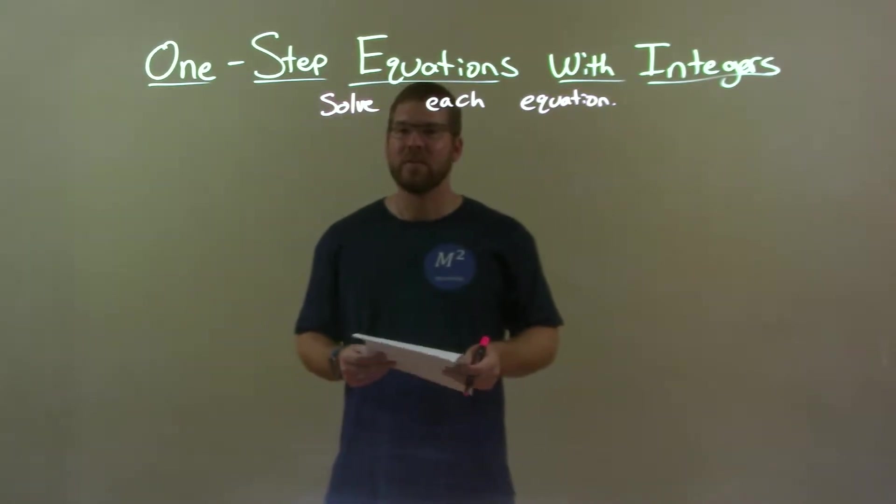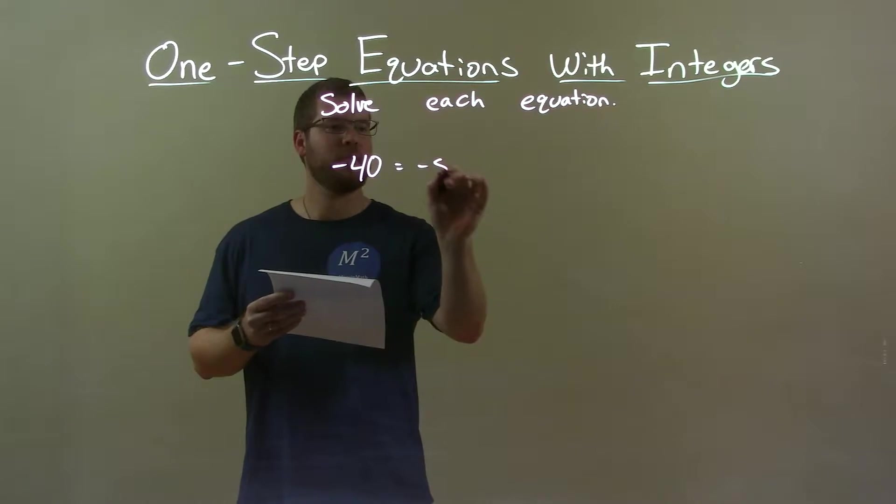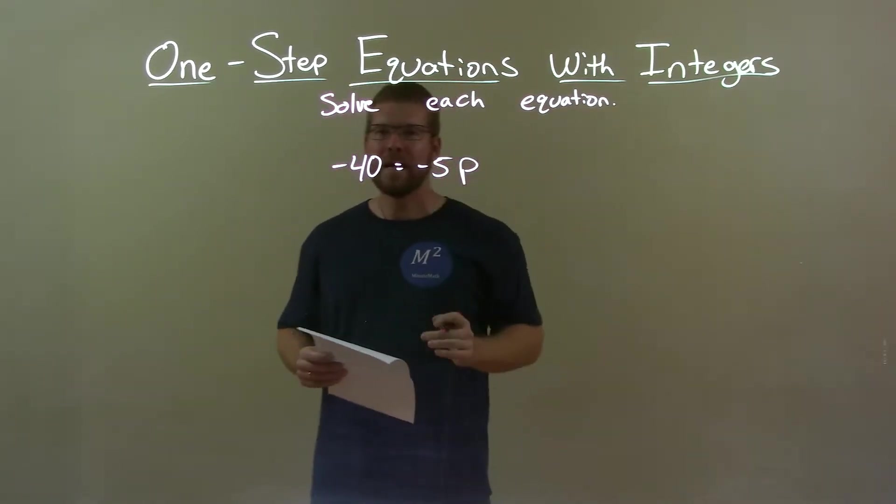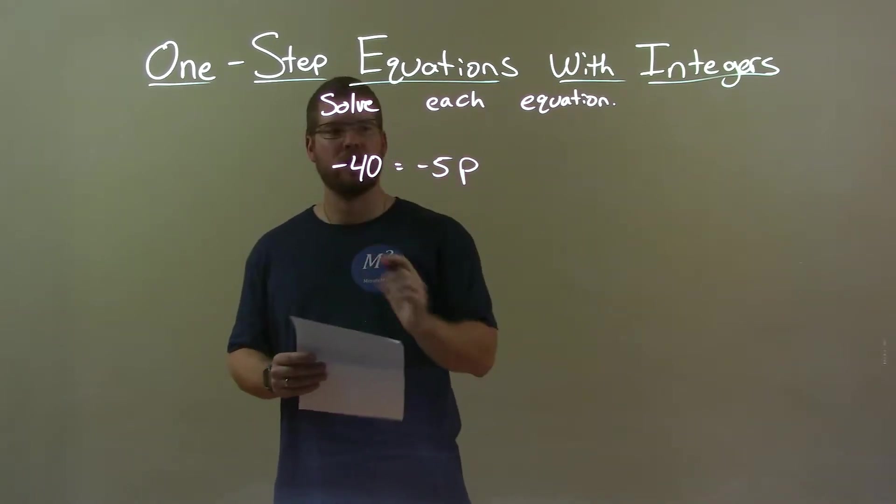If I was given this equation, negative 40 equals negative 5 times p, I want to get p by itself so to do that I have to get negative 5 to the other side.